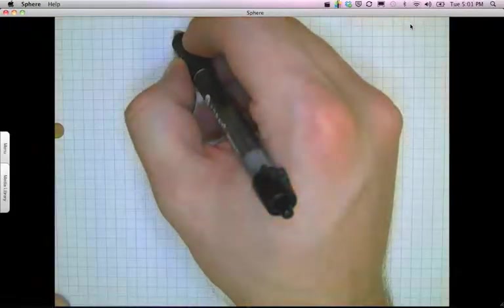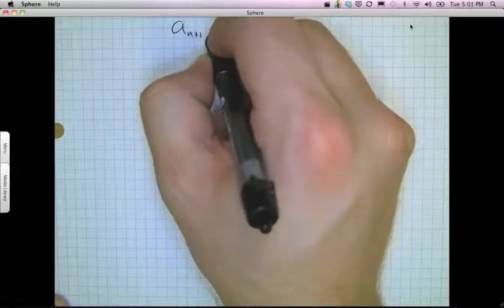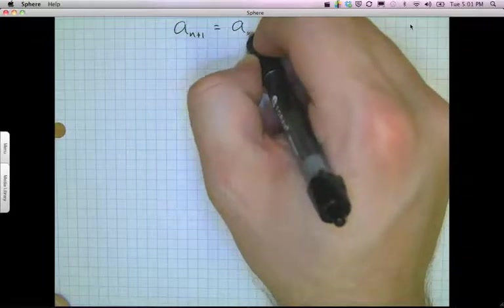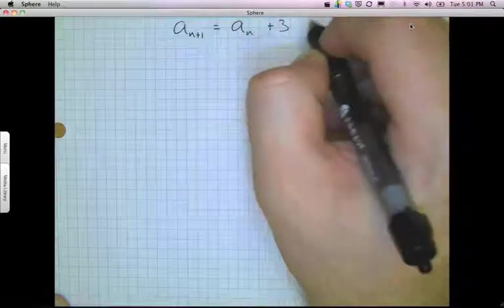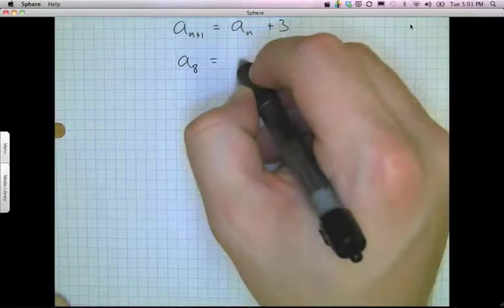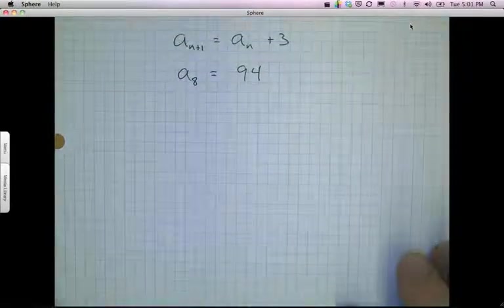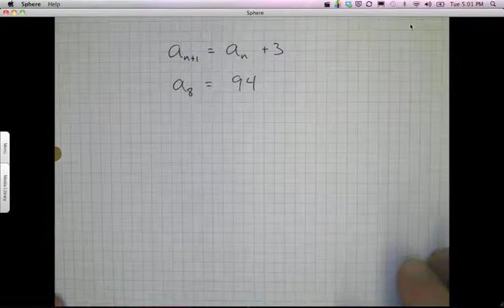So let's say I was given the recursive form, a to the n plus 1 is equal to a to the n plus 3. And I was told that a to the 8 is equal to 94. That's my beginnings. That's what I had to start with.